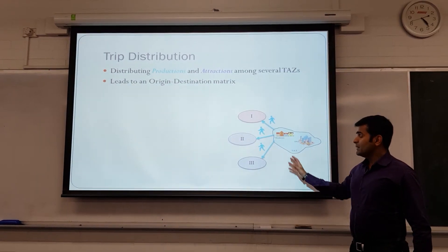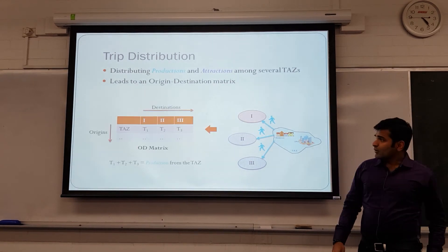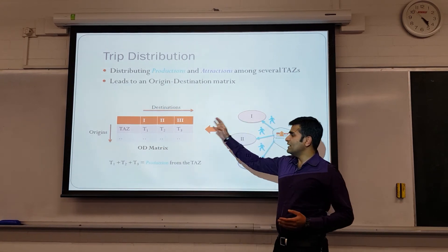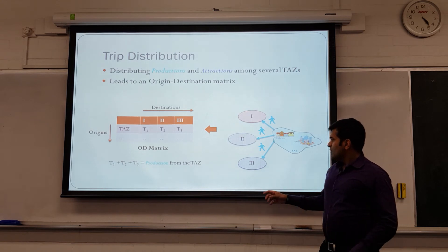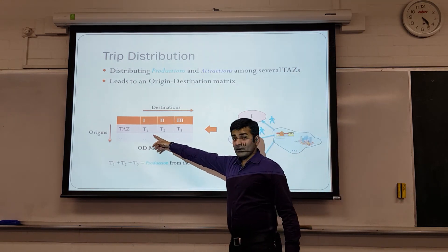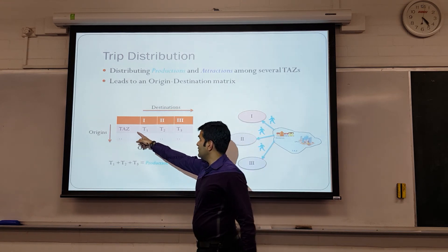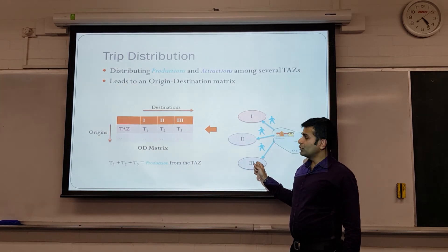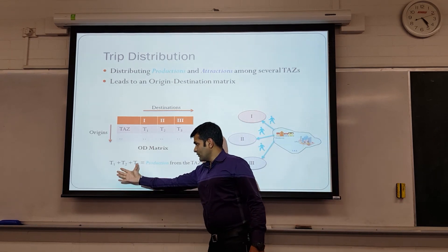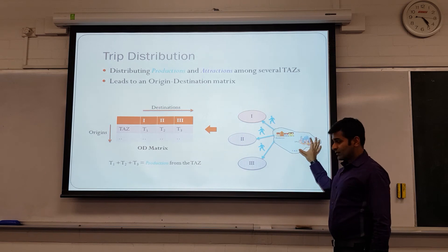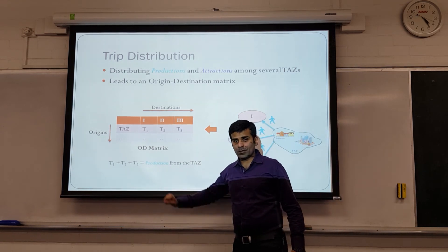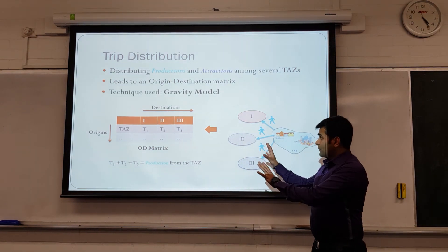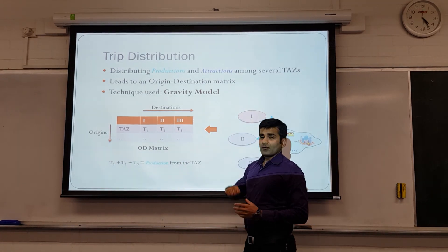Let's assume there are three other zones where people are traveling to. This transforms into a matrix where each row represents origins and each column represents destinations. If T1 people are moving between a TAZ and zone 1, it is represented by T1, and similarly for zones 2 and 3. We ensure that the total number of people moving out from a zone equals the production of that traffic analysis zone. The technique used to determine each cell of this matrix is the gravity model.